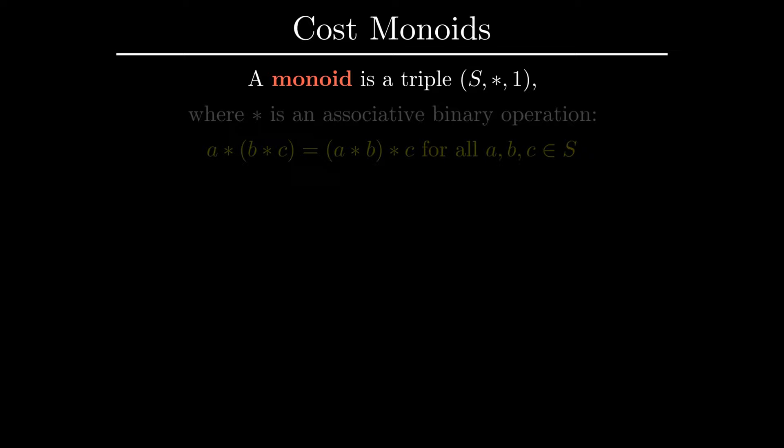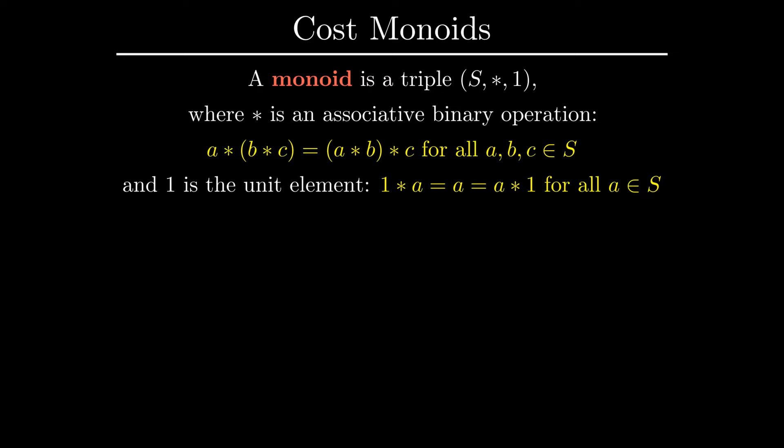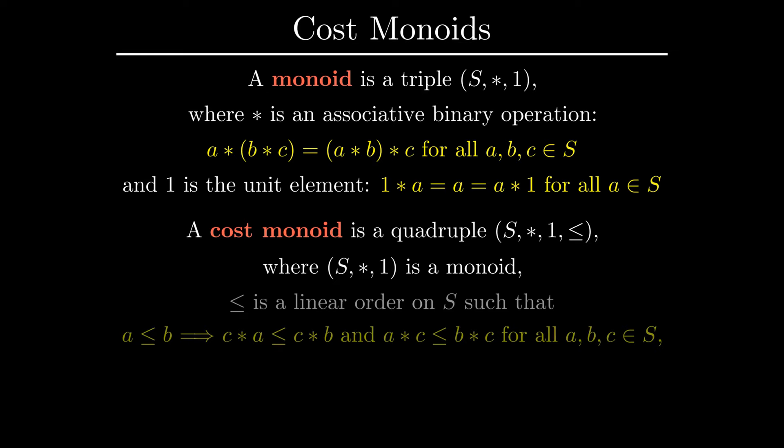To describe conditions on the cost structure under which the Dijkstra algorithm does work, we need the notion of a cost monoid. Recall that a monoid is a set with an associative binary operation, referred to as multiplication, and a unit element. A cost monoid is a monoid with a linear order, which respects the multiplication in the sense that if a ≤ b, then multiplying both sides by any element c preserves the inequality, and with the unit element being the smallest element in this order.